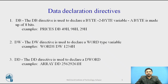The next is DW. The DW directive is used to declare a word type variable. A word occupies 16 bits or 2 bytes. In the example, 'words' is of data type DW with values 1234 and 3456. Here we declare an array of 2 words and initialize them with the specified values.